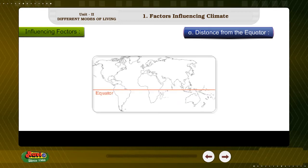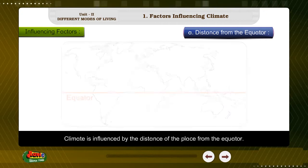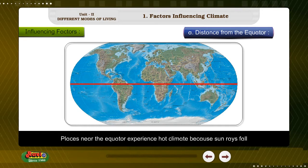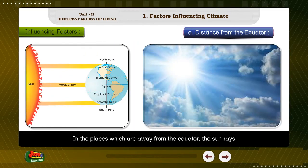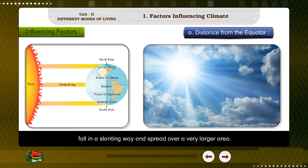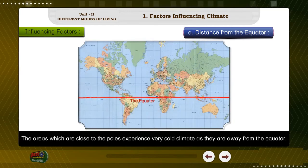Factor A: Distance from the equator. Climate is influenced by the distance of the place from the equator. Places near the equator experience hot climate because sun rays fall vertically near the equator and spread over a small area in this region. In places which are away from the equator, the sun rays fall in a slanting way and spread over a very large area, so the temperature is low in such areas. The areas which are close to the poles experience very cold climate as they are far away from the equator.